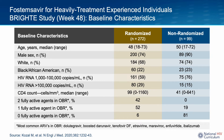Enrollees in the non-randomized cohort switched right away to Fostemsevir plus an optimized background regimen. Here is a description of the baseline participant characteristics. I would highlight that the median CD4 count was below 100 in both groups. A proportion of both groups had a baseline viral load above 100,000. You can see the proportion in each study group that had two fully active agents in the optimized background regimen, as well as the proportion with one fully active agent and the proportion with zero fully active agents, which was quite high in the non-randomized cohort.